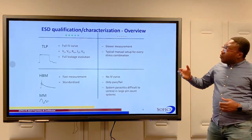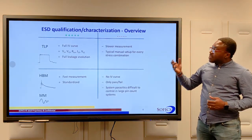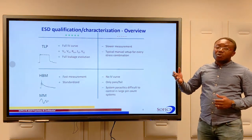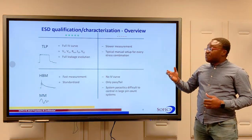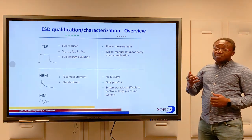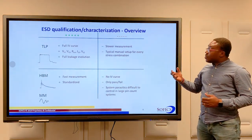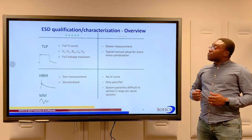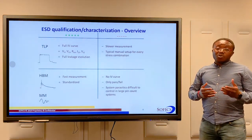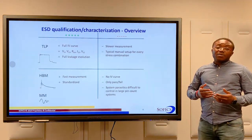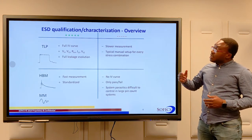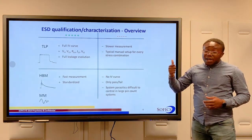So in summary, while test models like the human body model, the machine model, or the charged device model are rather fast to implement, they only yield pass-fail information and do not give us an IV curve. On the other hand, TLP measurements are rather slow and require manual setup of the die for each measurement. However, they give us a full IV curve.